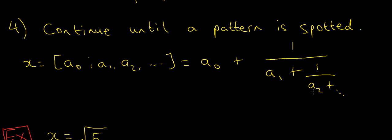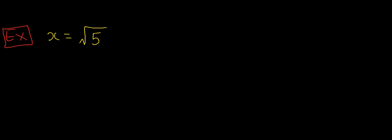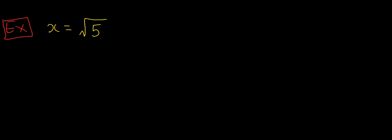Those a₀, a₁, a₂, a₃ are just going to make up the terms of the continued fraction — the first term, and then the next, and so on and so forth. So let's look at an example. Let's try and find the continued fraction expansion of the square root of 5.